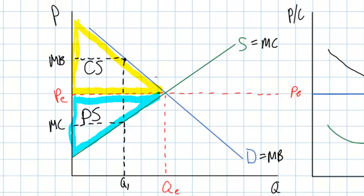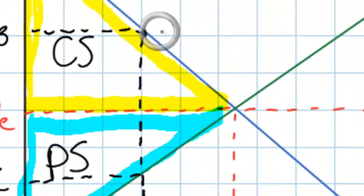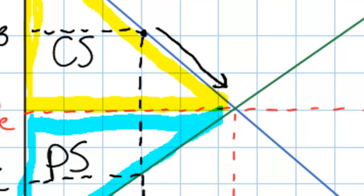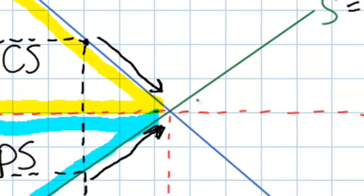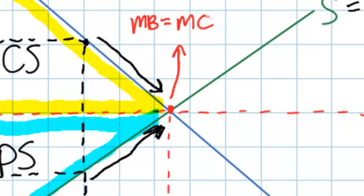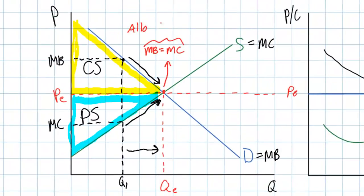At Q1, society benefits more from this good than it costs producers to produce it — we would all be better off if a greater quantity were produced. If we produced at QE, the marginal benefit would diminish due to the law of diminishing marginal utility, while the marginal cost would increase due to the law of diminishing marginal returns. The two would converge on the equilibrium point. Only at the equilibrium point is the marginal benefit enjoyed by consumers equal to the marginal cost imposed on producers — this is the allocatively efficient level of output.